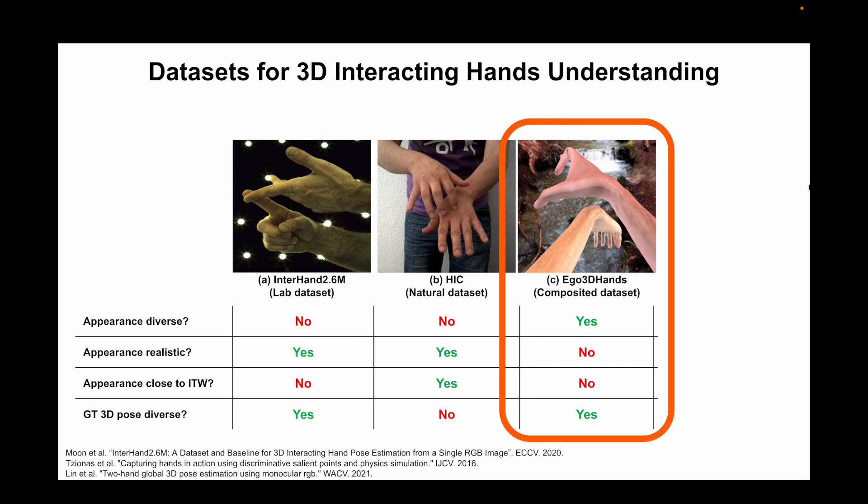Ego3D Hands, which belongs to the composited dataset category, provides large-scale synthetic images with 3D ground truth. Its images are composited with random background images with rendered hands. However, as they use simple linear blending for the composition, their image quality is not very good.